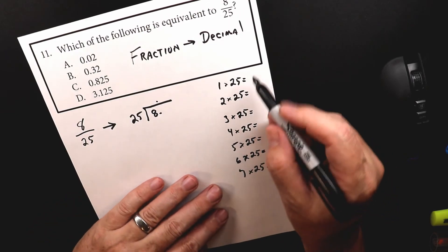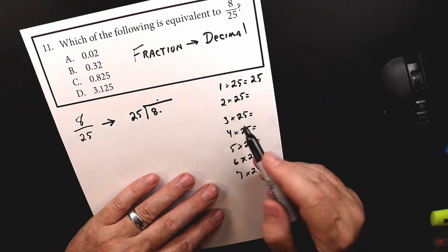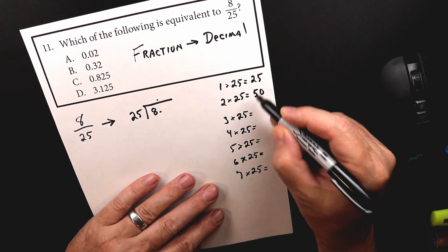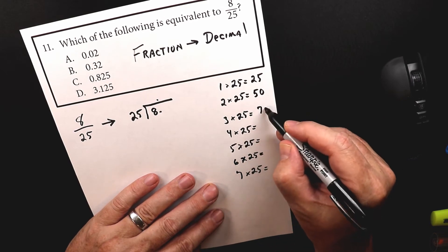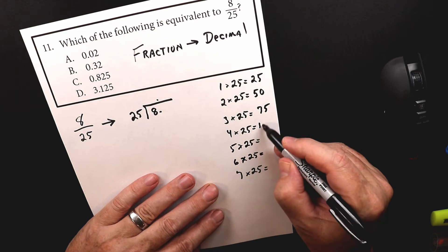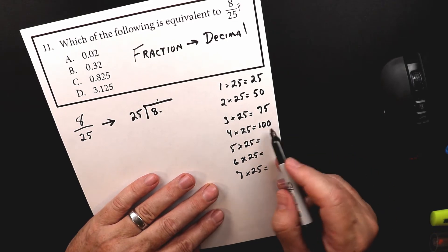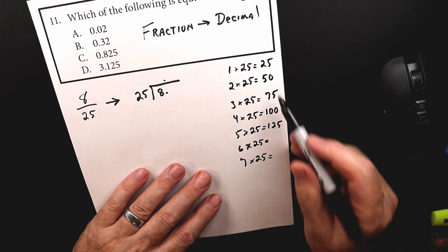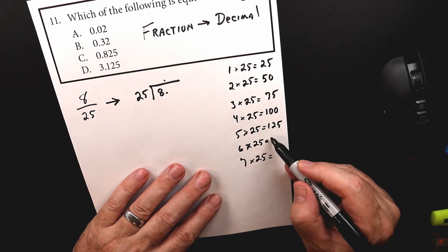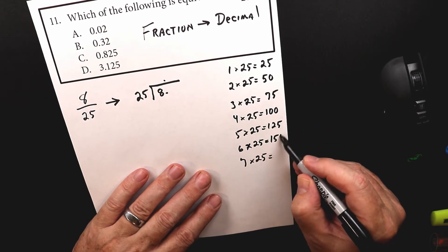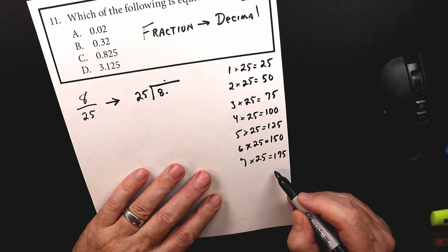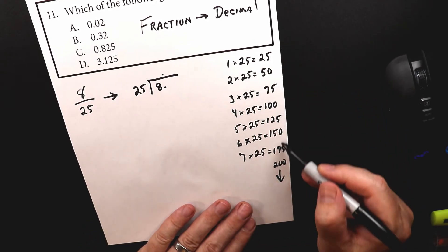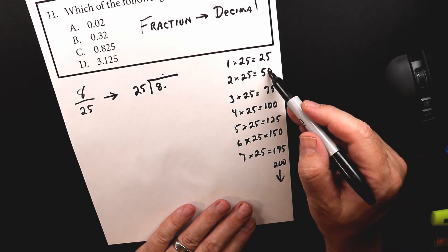One quarter is the same as 25 pennies. Two quarters is the same as 50 cents. Three quarters equals 75 cents. Four quarters equals 100 cents or a dollar. Five quarters — we just add 25 — so it's 125. Then the next ones are 150, 175, two dollars, and so on. These are your 25 times tables.